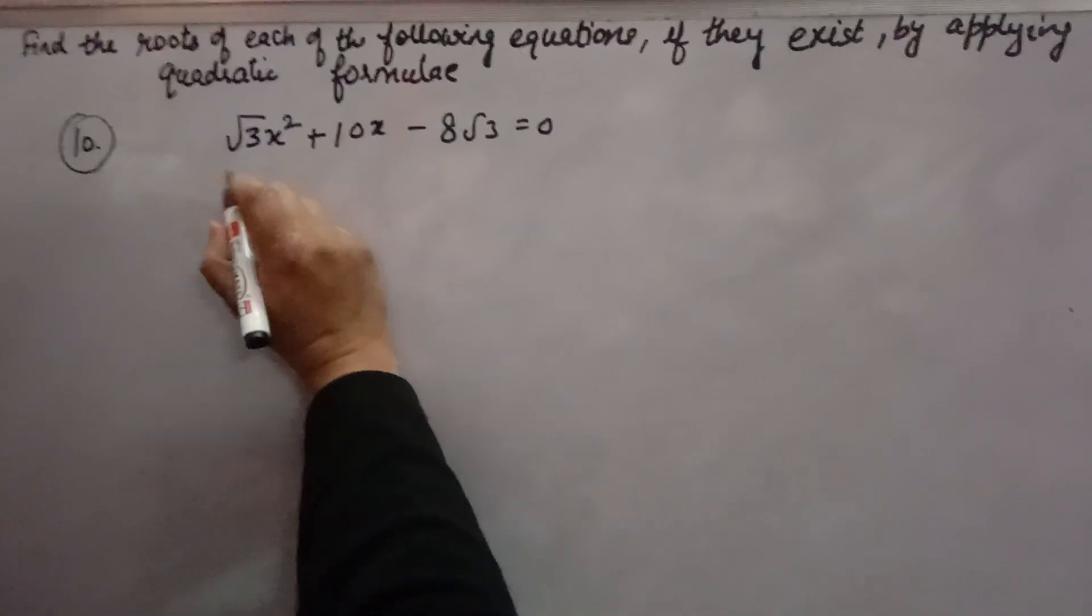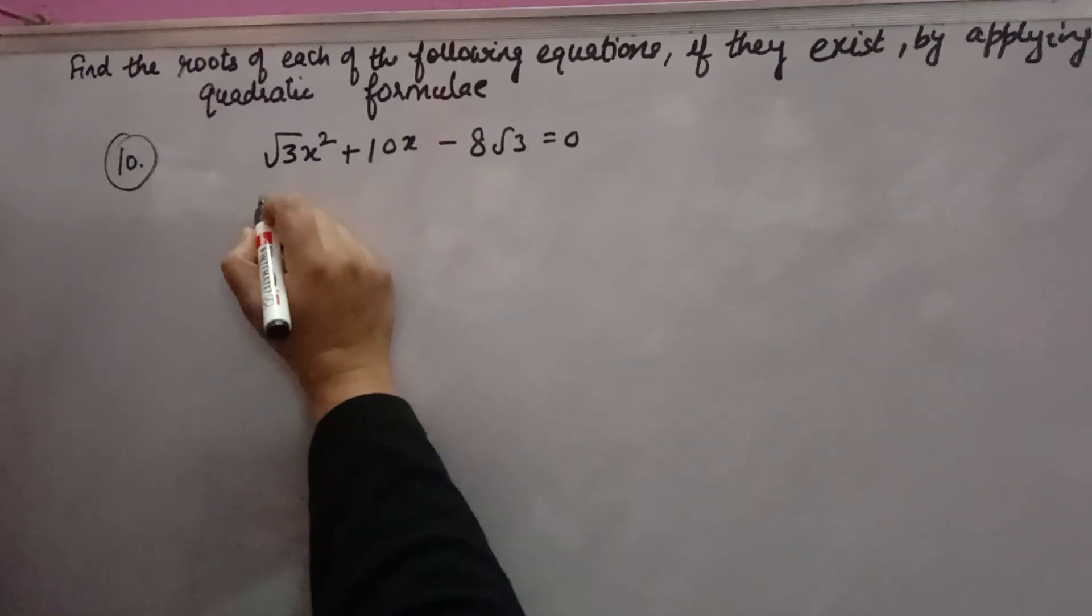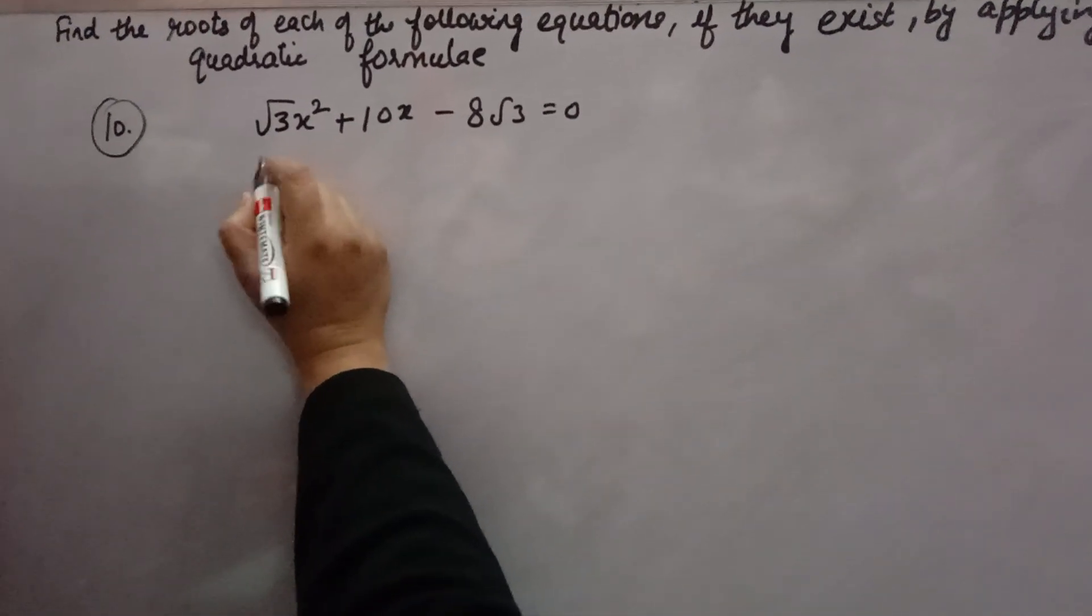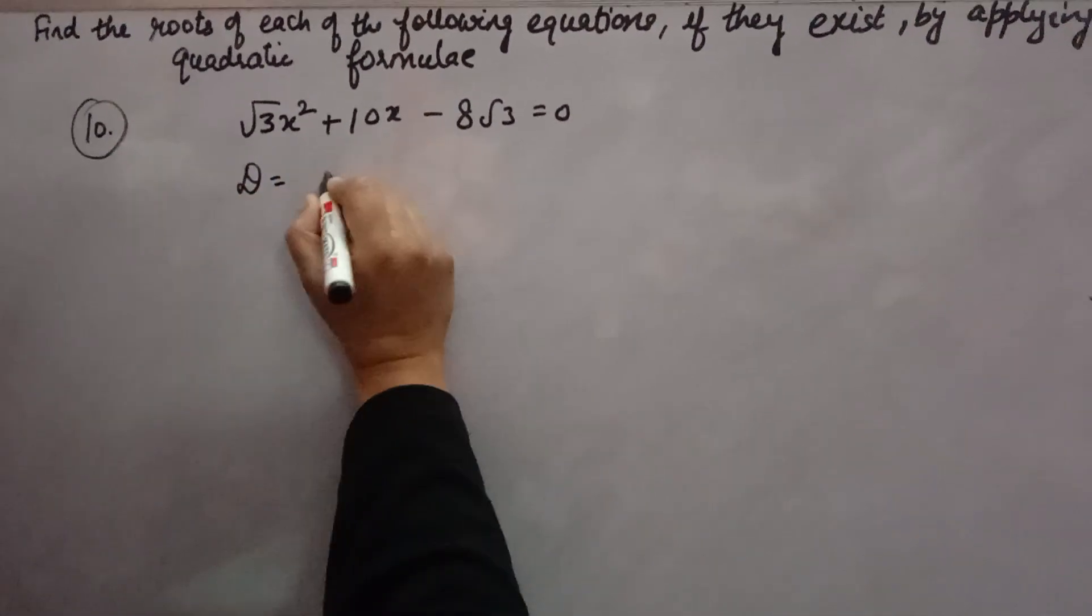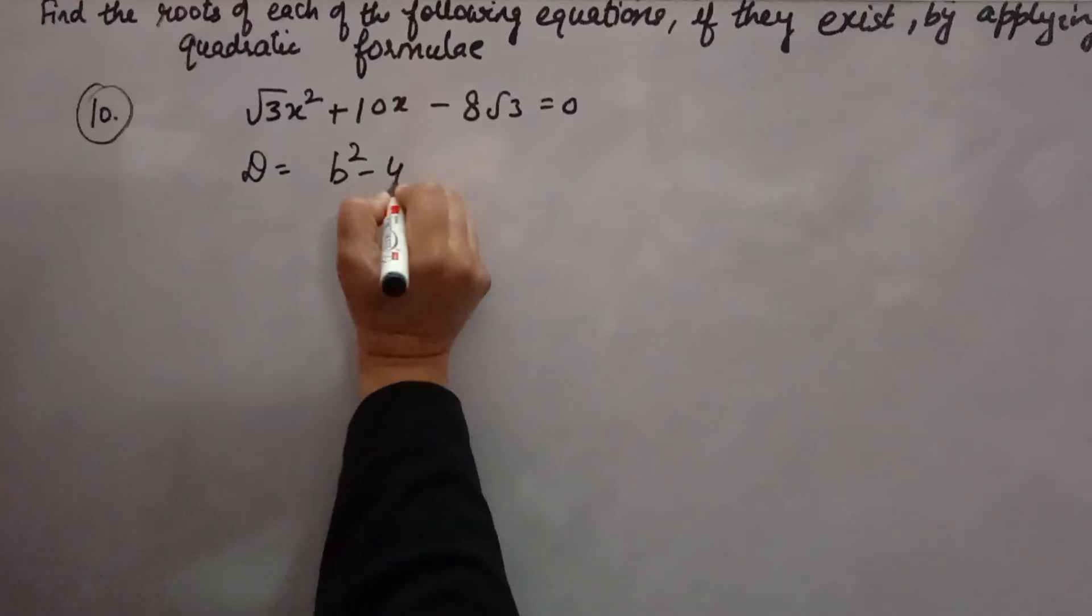So firstly, you have to check whether the roots exist of this quadratic equation or not. For that, you have to find discriminant, that is b squared minus 4ac.